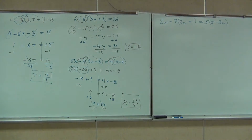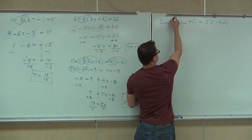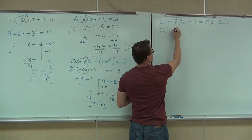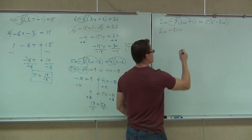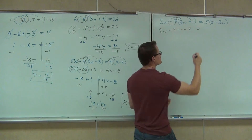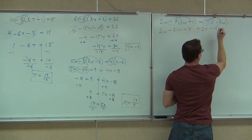Remember: we want to distribute first, then combine like terms, then get rid of the smaller variable if there are two variables, then the constant term, and finally divide. In our new problem, I'll leave the 2w alone, but I'm distributing negative 7. So we get 2w minus 21w minus 7. On the right-hand side, distributing 5 gives us 25 minus 12w.